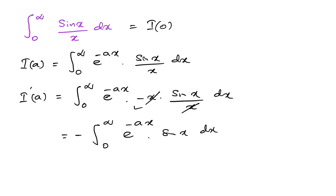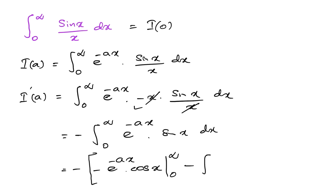We use integration by parts. Taking e^(−ax) and integrating sin(x) to get −cos(x), we have: minus [ e^(−ax) times (−cos(x)) from 0 to infinity, minus the integral from 0 to infinity of (−cos(x)) times the derivative of e^(−ax), which is −a times e^(−ax) dx ].